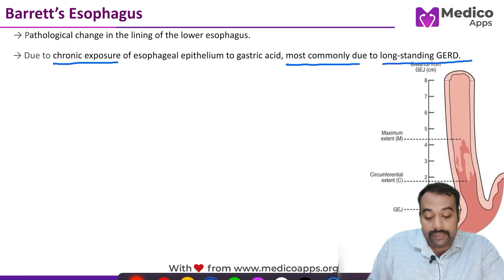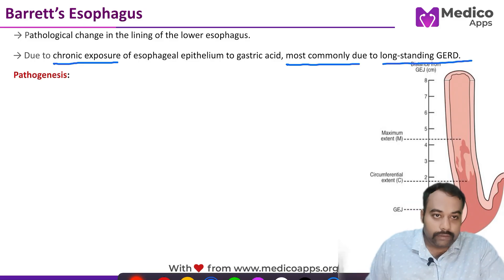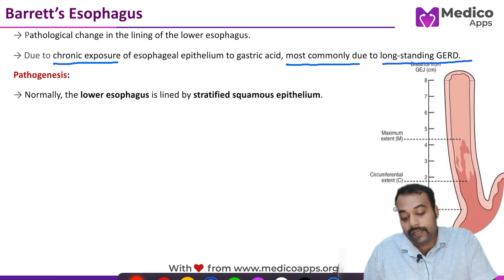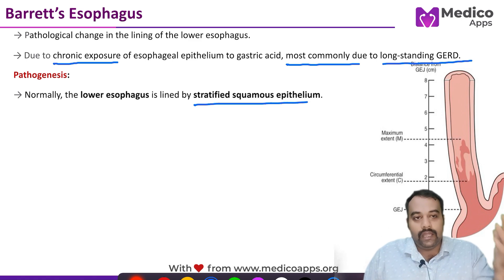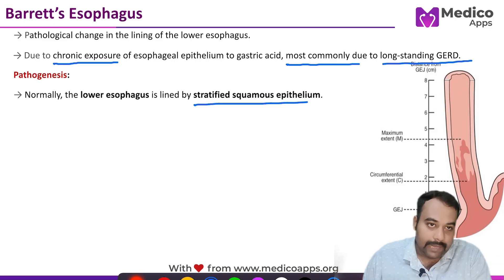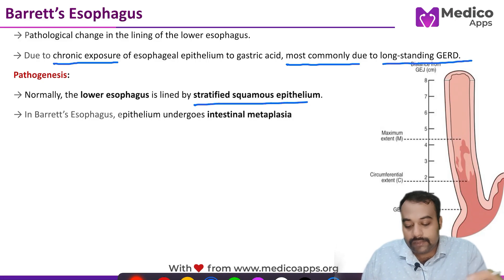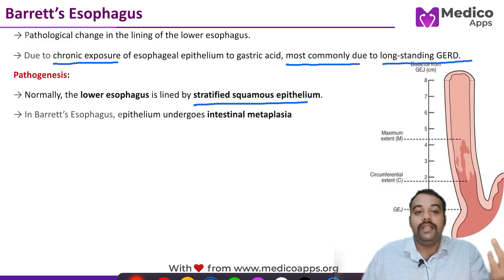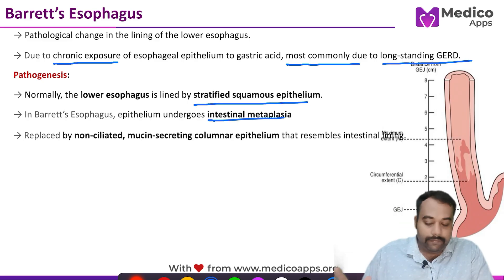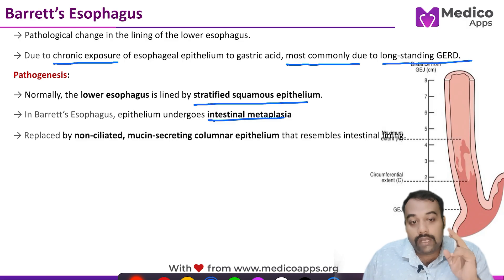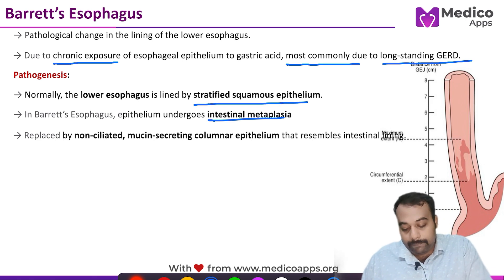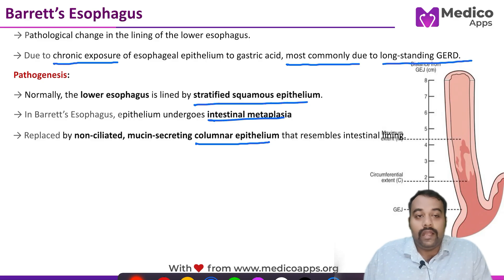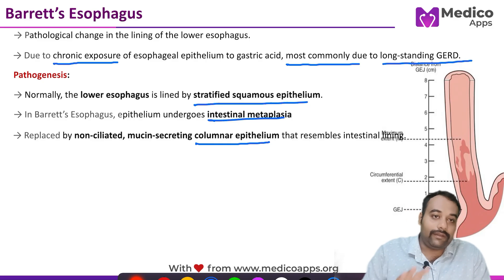The lower portion of the esophagus is normally lined by stratified squamous epithelium. Due to chronic exposure to gastric content, a metaplasia occurs where that stratified squamous epithelium is replaced by intestinal-type mucosa — known as intestinal metaplasia. This squamous epithelium is replaced by columnar epithelium, as seen in the intestine, with the presence of mucin-secreting goblet cells, which are the pathognomonic feature.